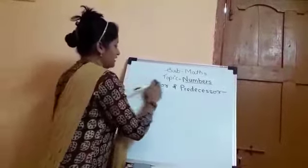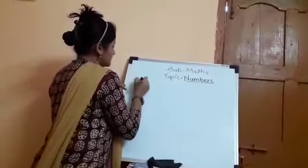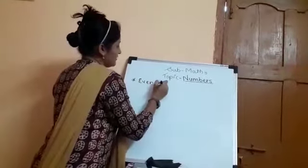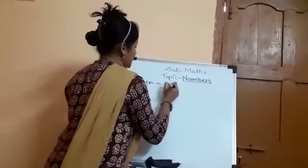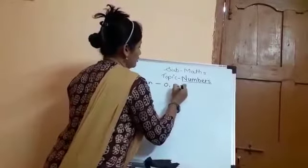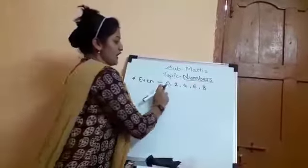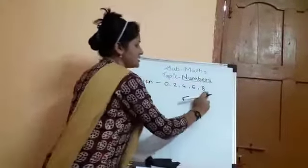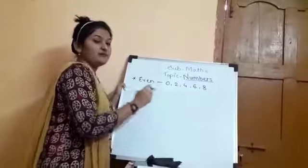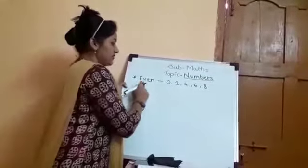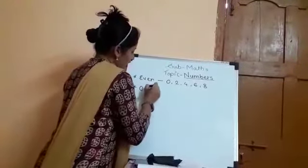The next concept is even and odd numbers. Even numbers are those having certain digits at the 1's place. The digits are 0, 2, 4, 6, and 8. If you find any of these digits at the 1's place of any number, that number is considered an even number.